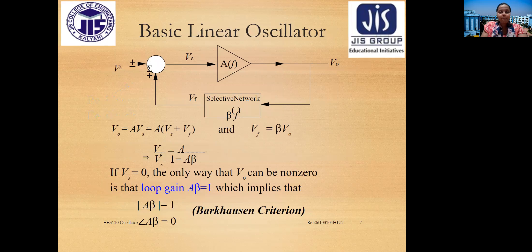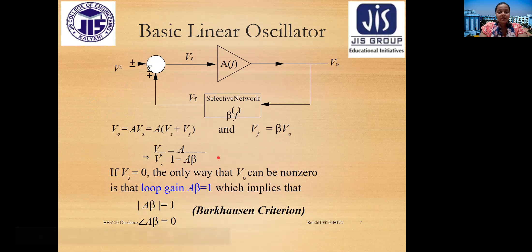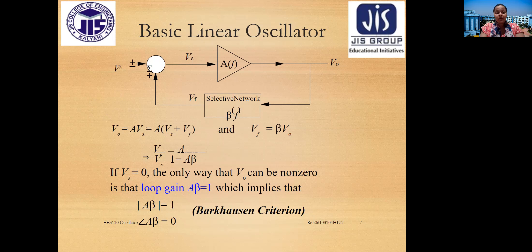In the basic linear oscillator circuit, the feedback factor is beta and the system gain is A. The output equals A times the input voltage (beta E), where beta E is the sum of Vs and Vf, and Vf equals beta times V0. The transfer function V0/Vs equals A divided by (1 minus A·beta). If Vs equals zero, V0 can be non-zero only if A·beta equals 1, meaning the magnitude of A·beta equals 1 and the angle of A·beta equals 0. This is known as the Barkhausen criteria.